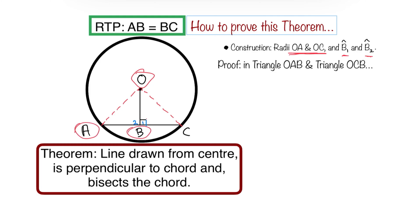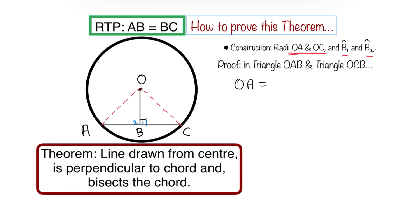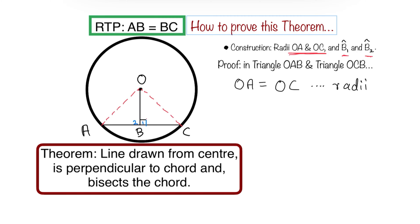In triangle OAB, I'm going to say OA is equal to OC — because in triangle OCB we know OA equals OC since the radii are always equal. The reason is: radii. That's the first statement.